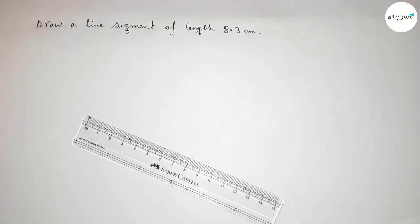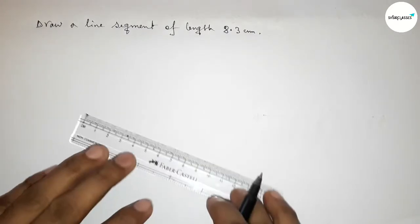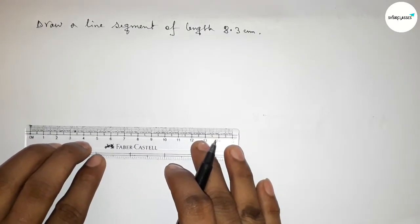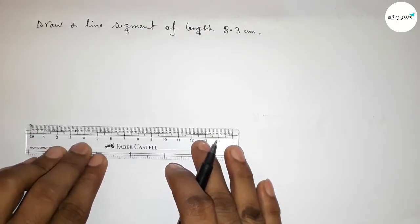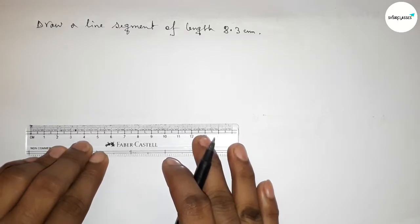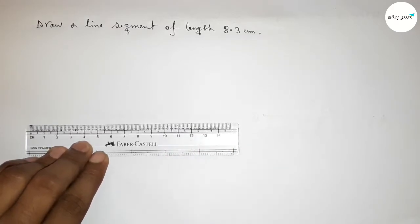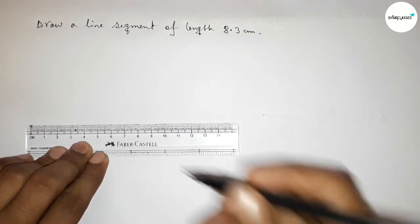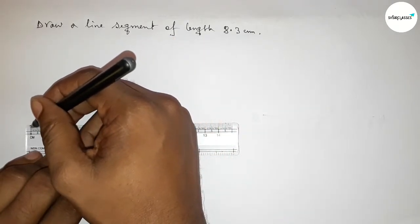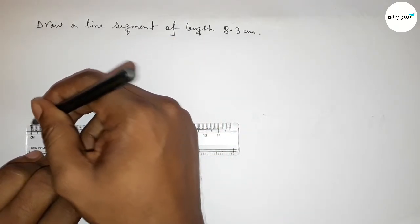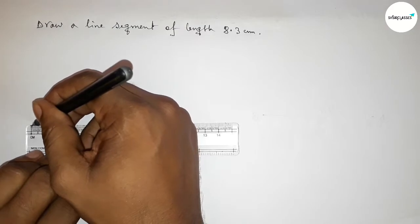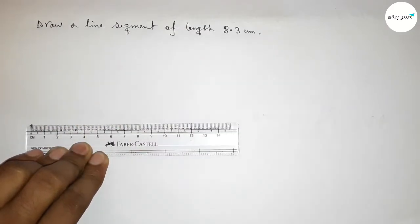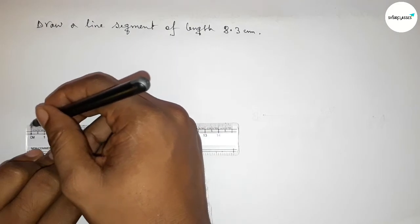First, placing the scale here perfectly, then measure the length 8.3 centimeters. Now, the starting point is zero, so first marking here the starting zero.